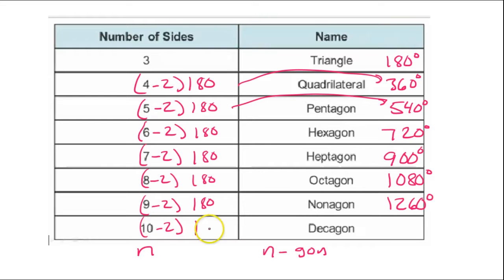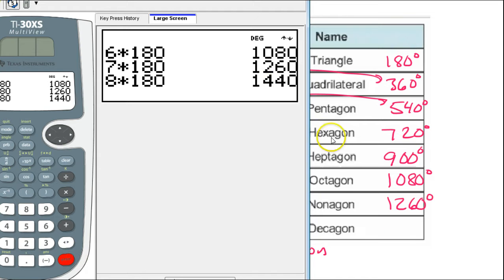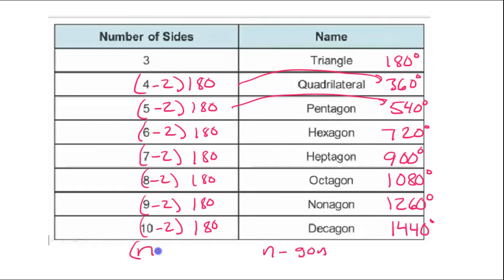Then 9 minus 2 times 180 is 7 times 180, which is 1260. And finally, 10 minus 2 times 180 is 8 times 180, which is 1440. So if I were you, I would include this chart in my notes including all of the degrees. Otherwise, you can just do this math quickly. In general, for our n-gon, if I want to know the total angles of any n-gon, it'll be n minus 2 times 180. That's the formula for all the interior angles of a polygon.